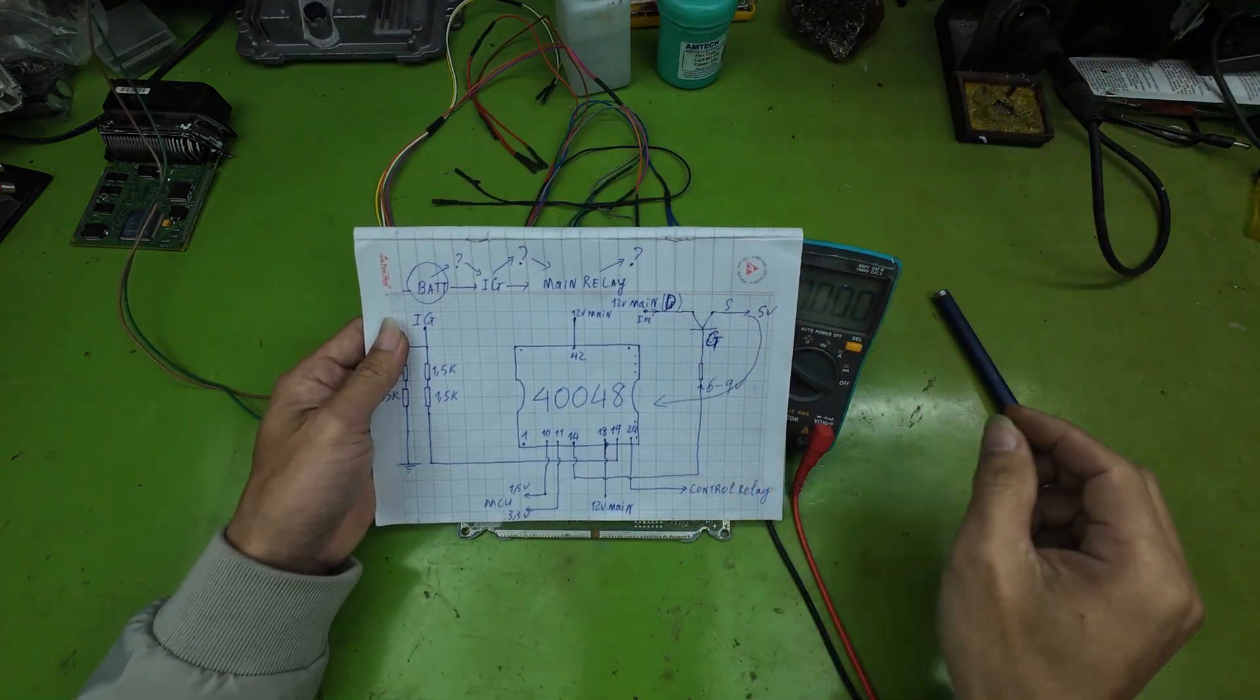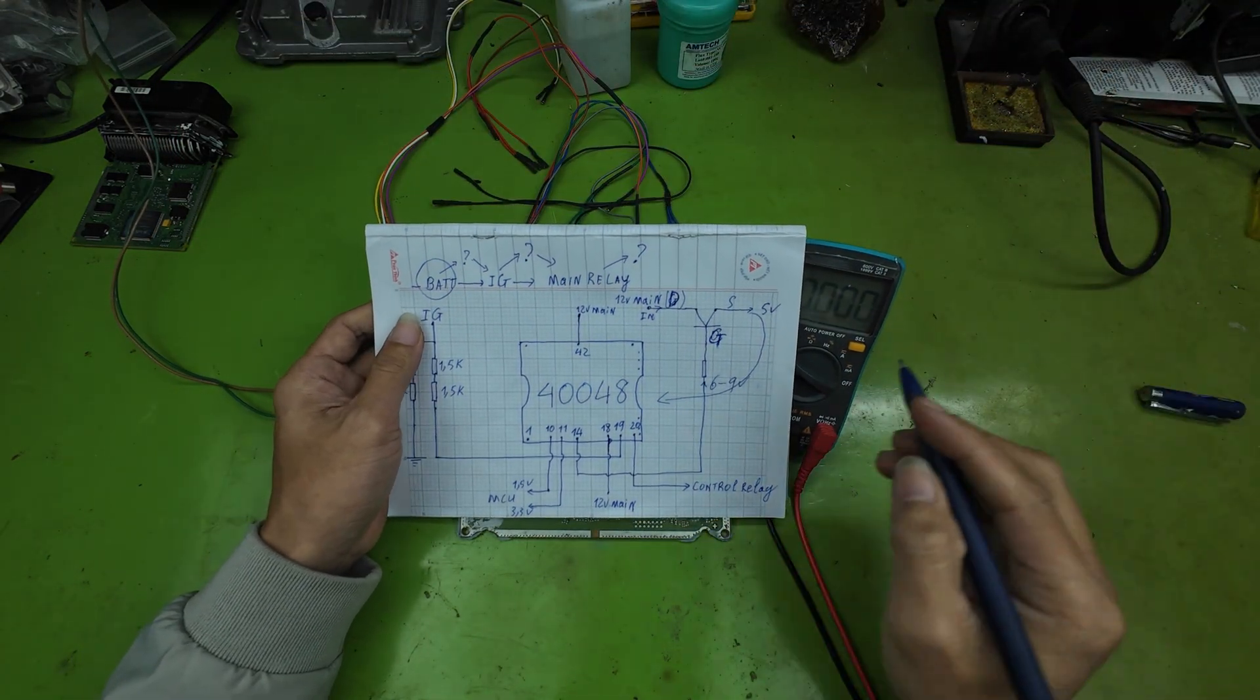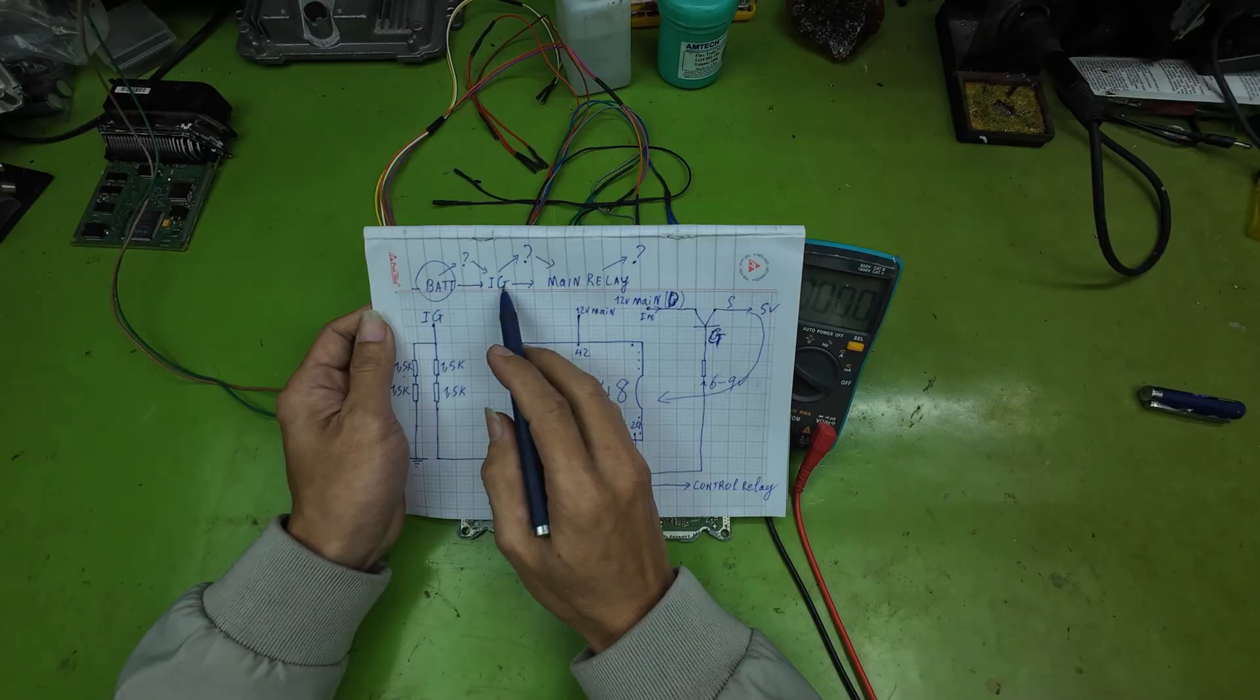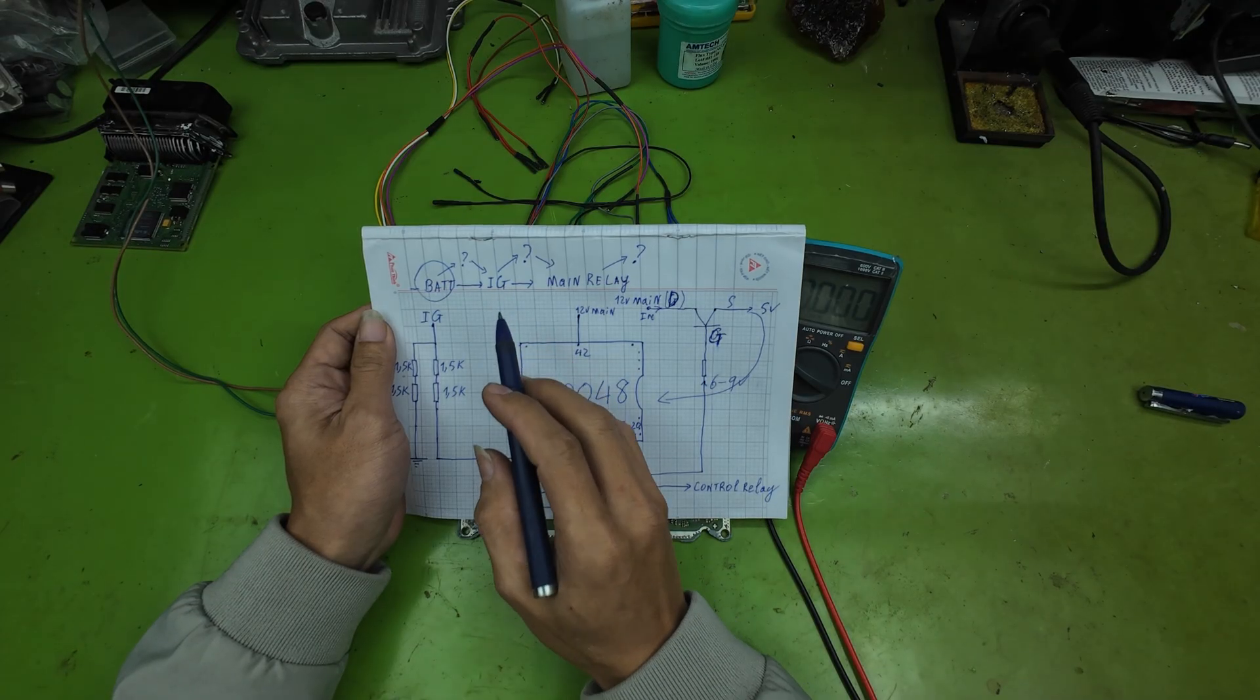This behavior allows the MCU time to store runtime data during startup. Therefore, we can easily tell whether the ECU is truly active by observing the power supply. Let's review the circuit diagram and analyze the sequence.